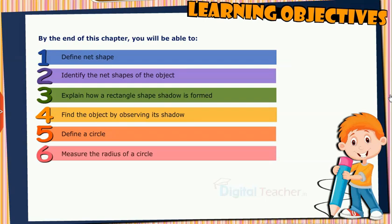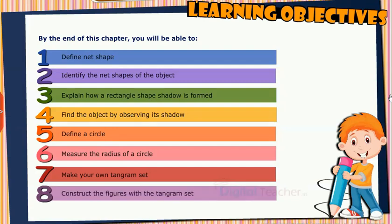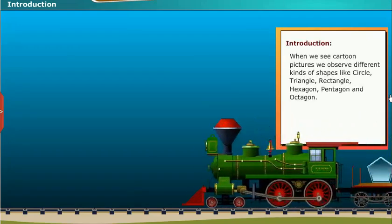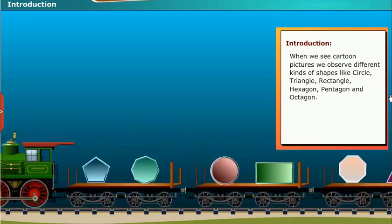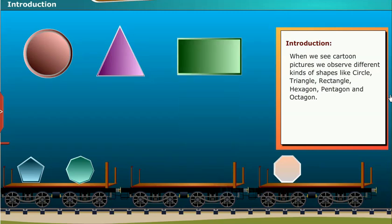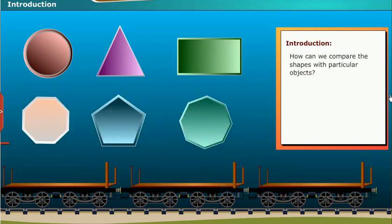You will also measure the radius of a circle, make your own tangram set, and construct figures with the tangram set. When we see cartoon pictures we observe different kinds of shapes like circle, triangle, rectangle, hexagon, pentagon and octagon. How can we compare these shapes with particular objects? Let's find out the answers to such questions in this chapter.